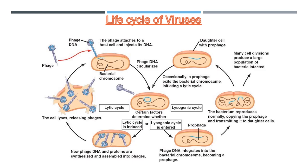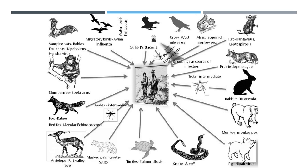The most common respiratory infections are upper respiratory infections, which include sore throat, sinusitis, and the common cold. Other viral respiratory infections include influenza and pneumonia. In small children, viruses also commonly cause croup.